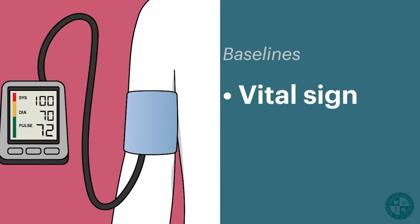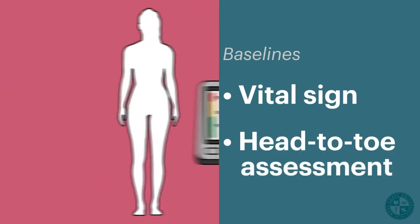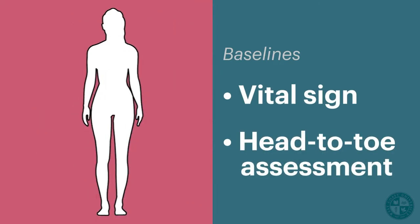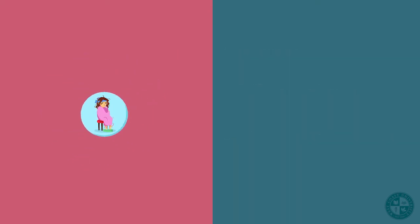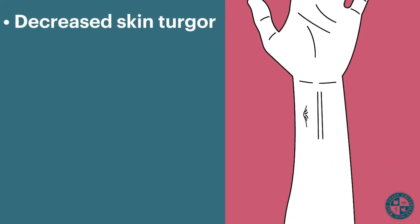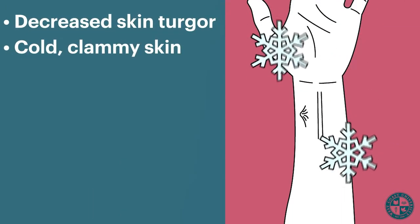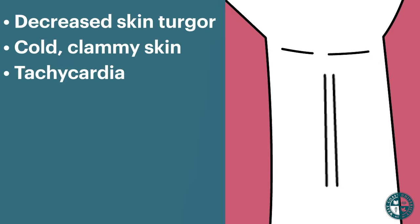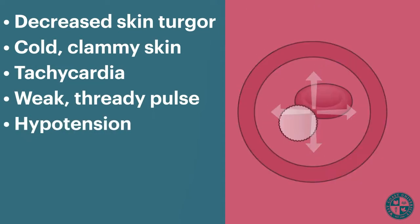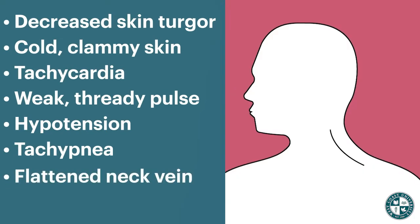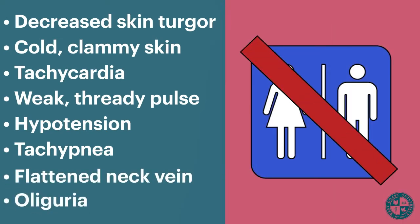Before we administer any solution, we need baselines — baseline vital signs and a baseline head-to-toe assessment. Some signs and symptoms of volume depletion would include decreased skin turgor, cold clammy skin, tachycardia, a weak thready pulse, hypotension, tachypnea, flattened neck veins, and oliguria, to name a few.